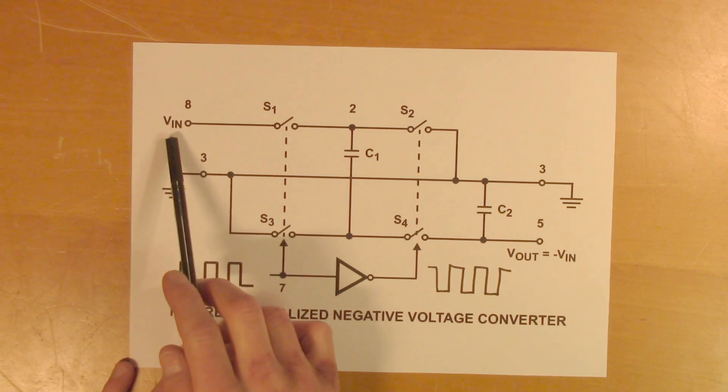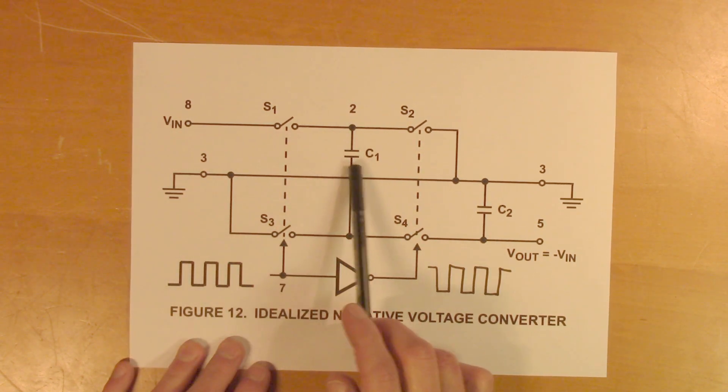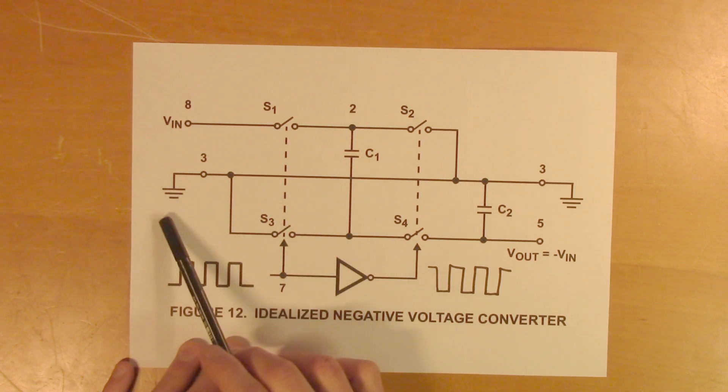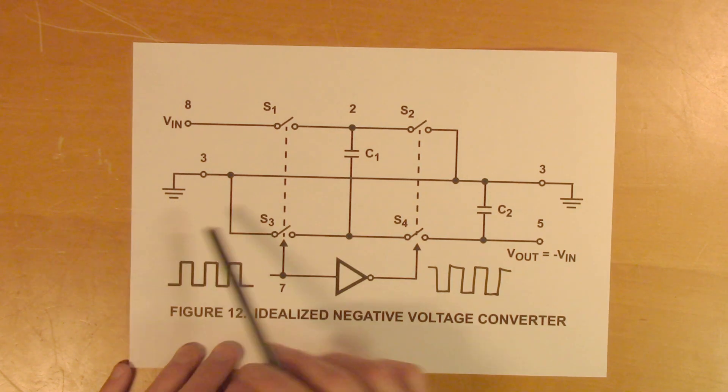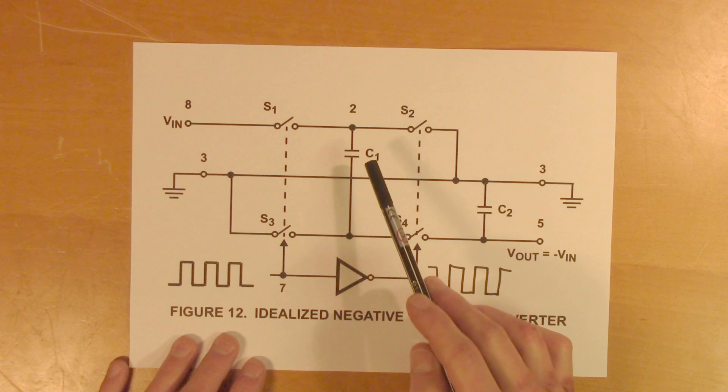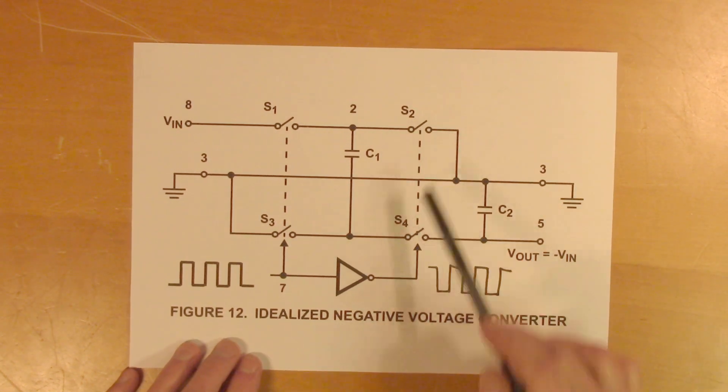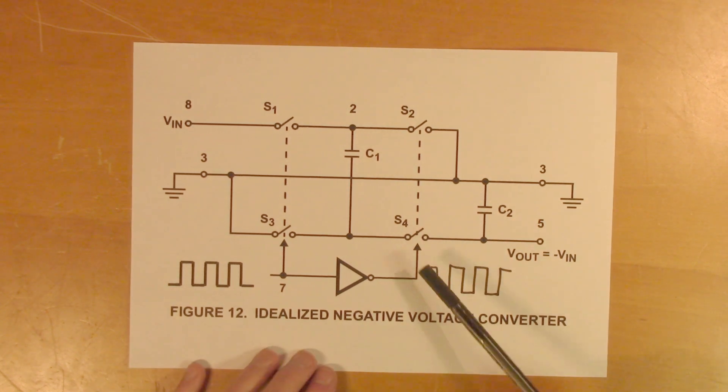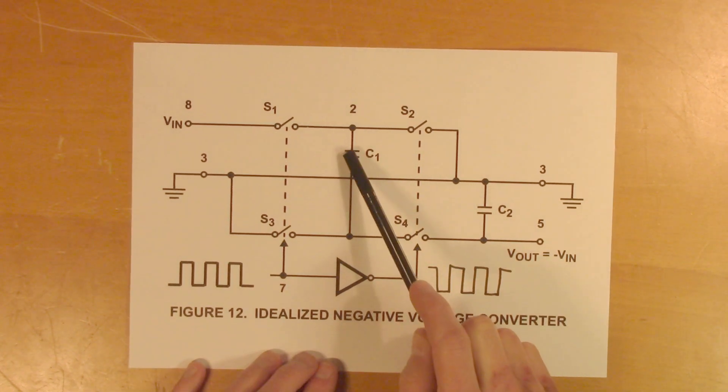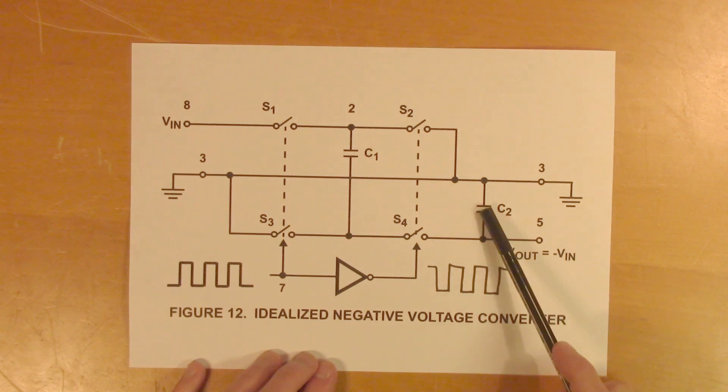Current will flow from Vin, into the capacitor, and to ground. And current will flow here until this capacitor is charged. And then at the negative pulse, these two will be open, and these two will be closed. And in that part of the cycle, this capacitor will transfer its charge to this one.